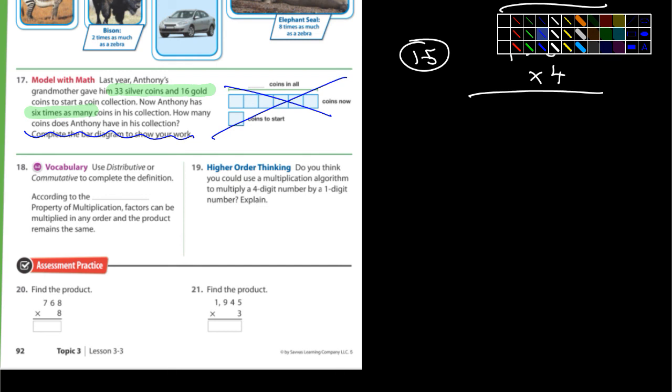Do you think you could use multiplication? Use a multiplication algorithm to multiply a four-digit number by a one-digit number. Explain. A four-digit number by a one-digit number. Could you use a multiplication algorithm? Well, if I understand the question correctly, if I just made up a four-digit number, like 2,897, and by a one-digit number times 2, could I use a multiplication algorithm to solve that? I would say yes. Not quite sure what they're asking there. Okay. I think that's it.